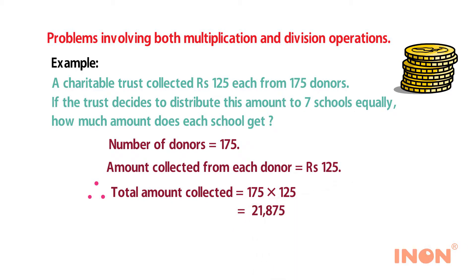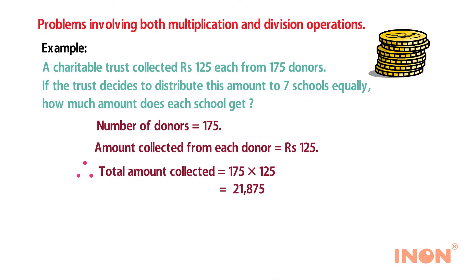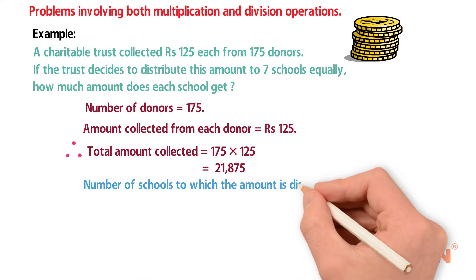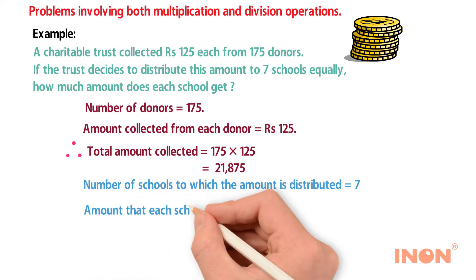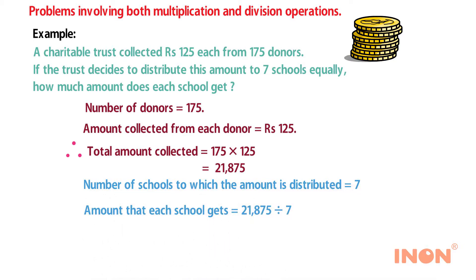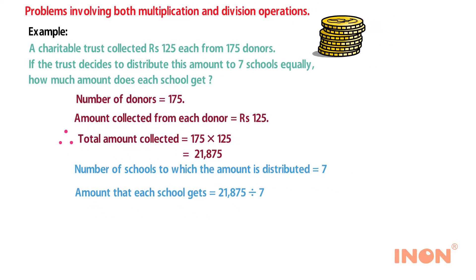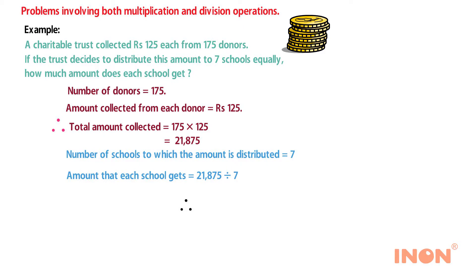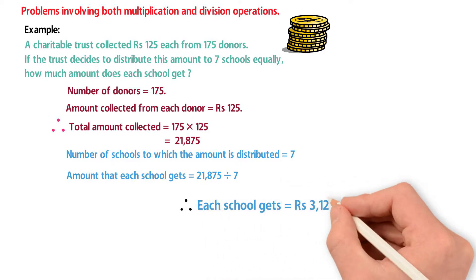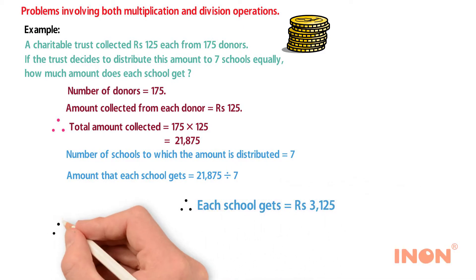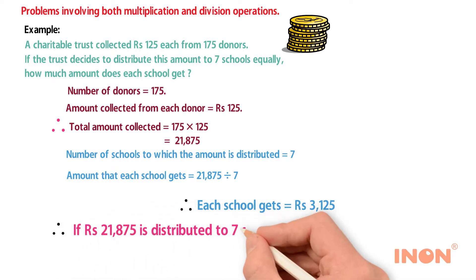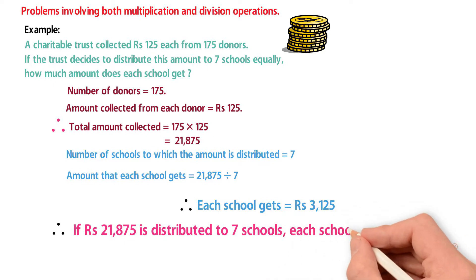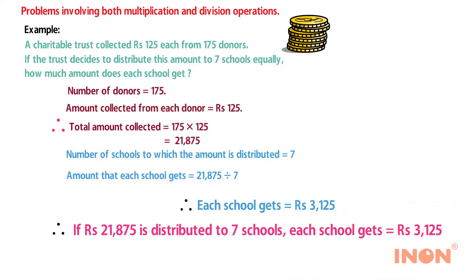If the trust decides to distribute this amount to 7 schools equally, the number of schools equals 7. Amount each school gets equals 21,875 divided by 7. Therefore, each school gets ₹3,125. If ₹21,875 is distributed to 7 schools, each school gets ₹3,125.